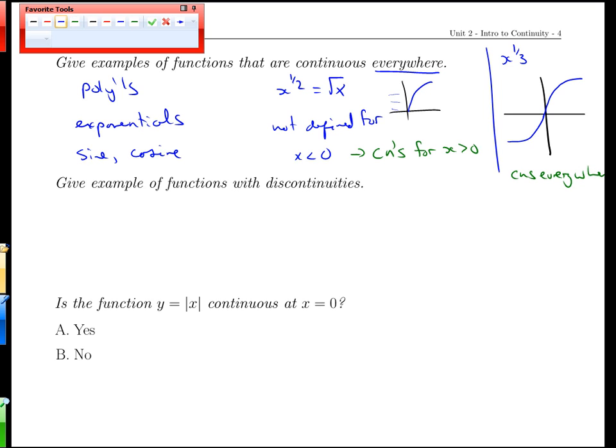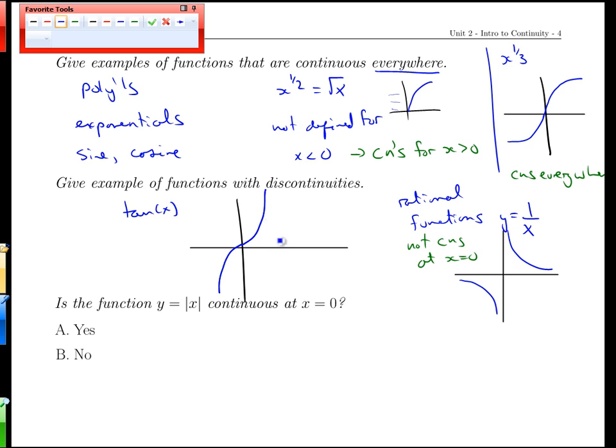All right. Other functions that might not be continuous everywhere, a very important class of them are the rational functions. Just as a simple example, if we have one over x, we know the graph for that has an asymptote, a vertical asymptote at x equals 0. It looks like this. And that function would not be continuous at 0. Because it takes two pen strokes to draw it, just as I drew it here, the top stroke and the bottom stroke there.